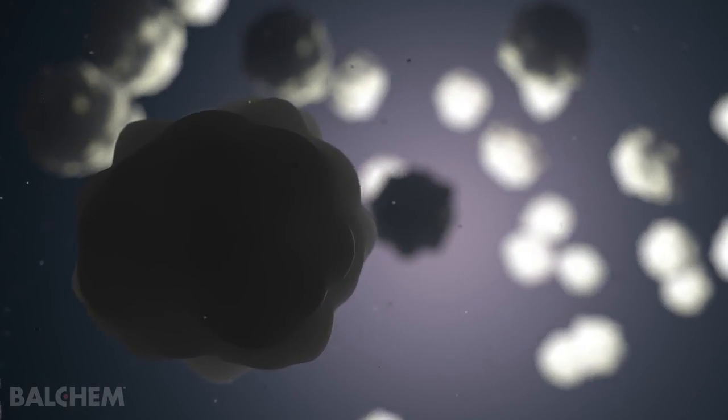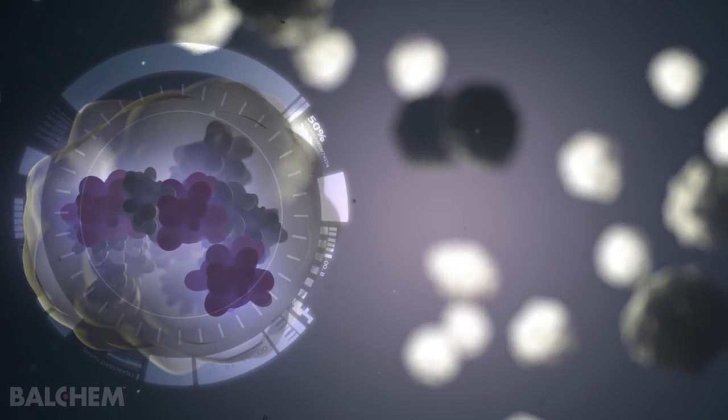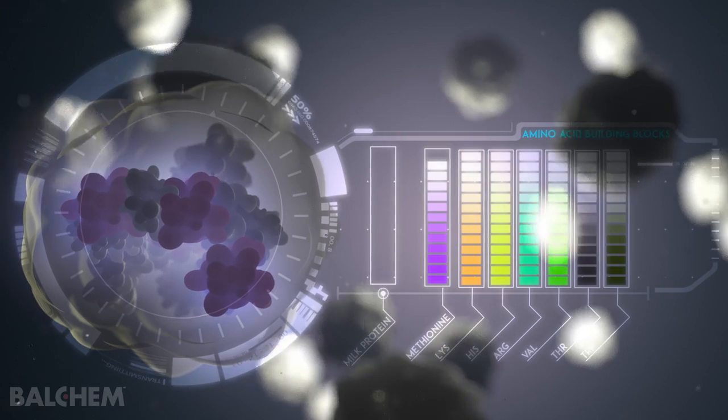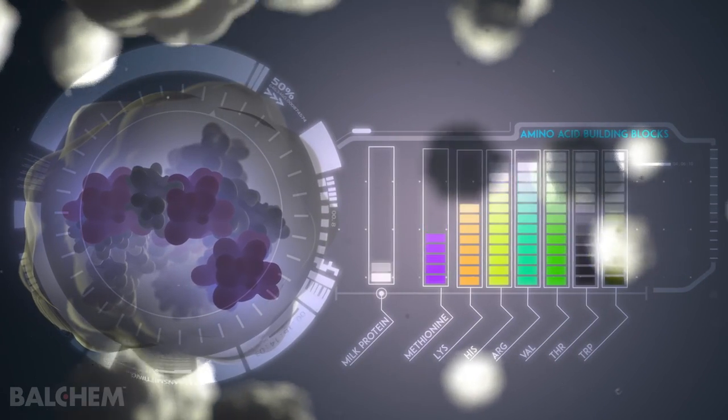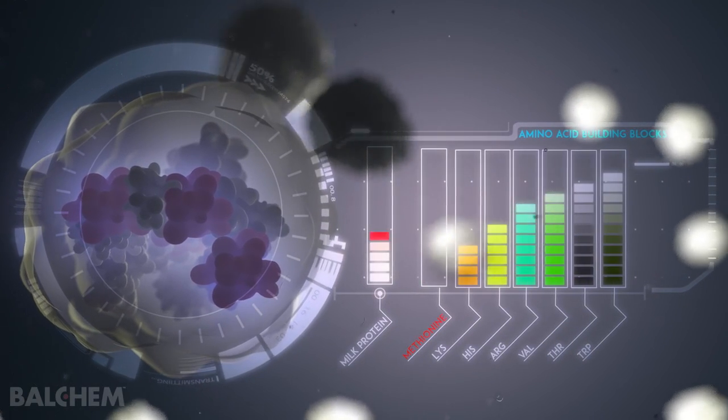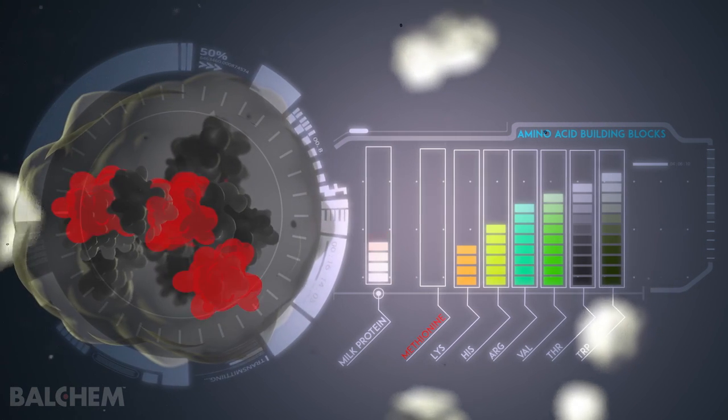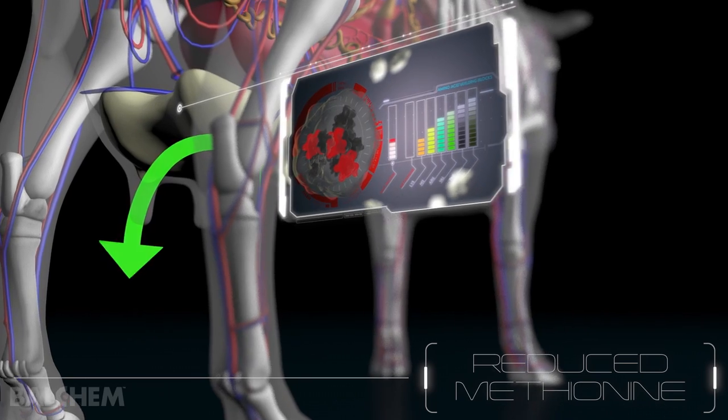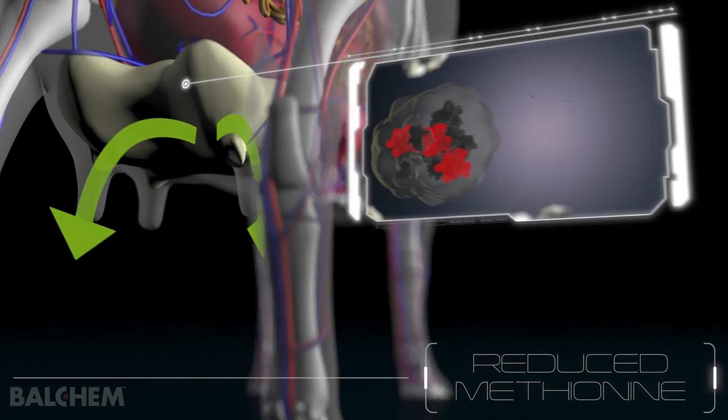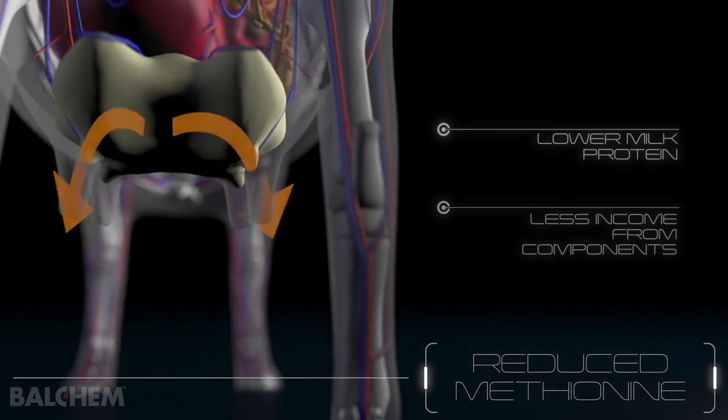When a cow synthesizes milk protein, methionine is among the first limiting amino acids, which means it is one of the first amino acids in short supply. Without this vital building block, a cow simply cannot synthesize milk protein, reducing the amount that is secreted by the mammary gland and ultimately sold to the consumer.